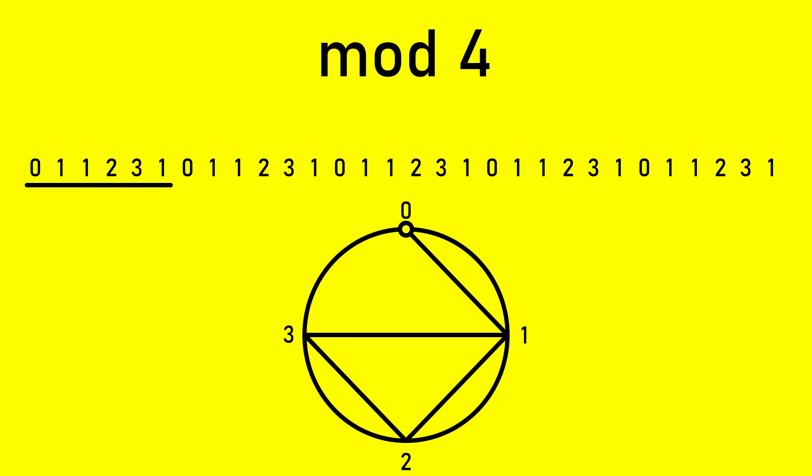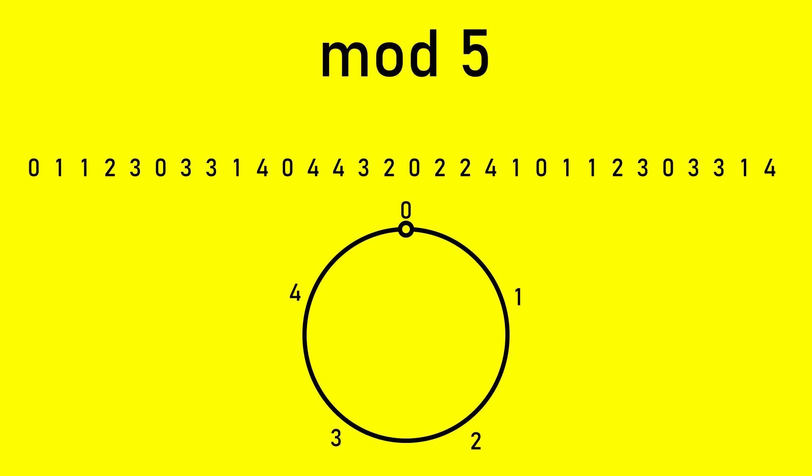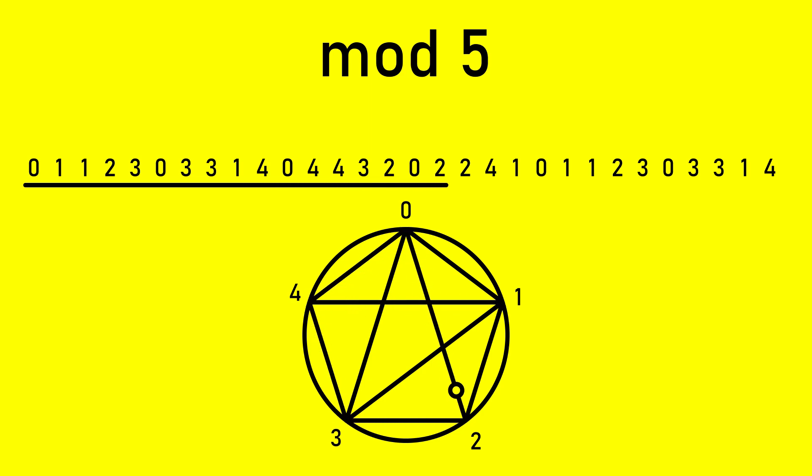Yet if we used the Fib Series mod five's sequence, with five points around the outside, we jump from zero to one, to one, two, three, back to zero, over to three twice, then to one, four, zero, four, four, three, two, zero, two, two, four, one. And then finally the sequence restarts. This time we happened to cover every possible diagonal, which again are the lines that connect any two points.